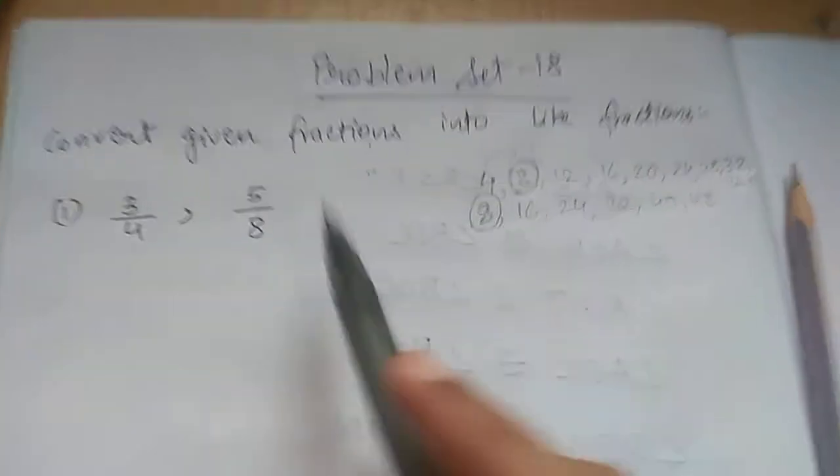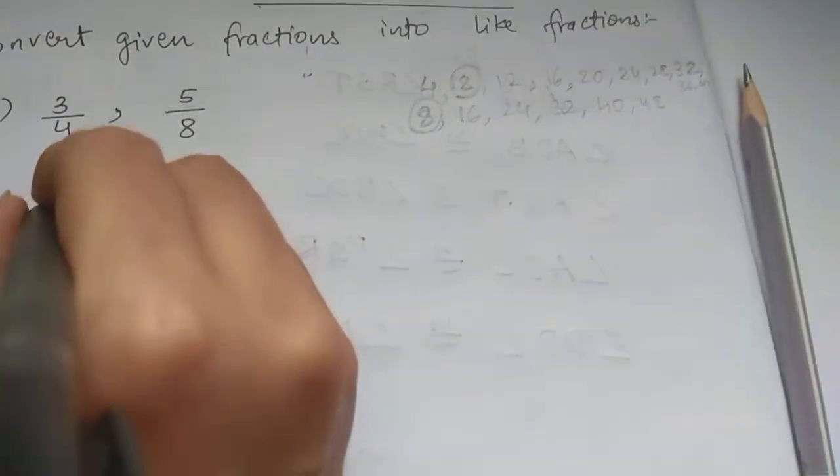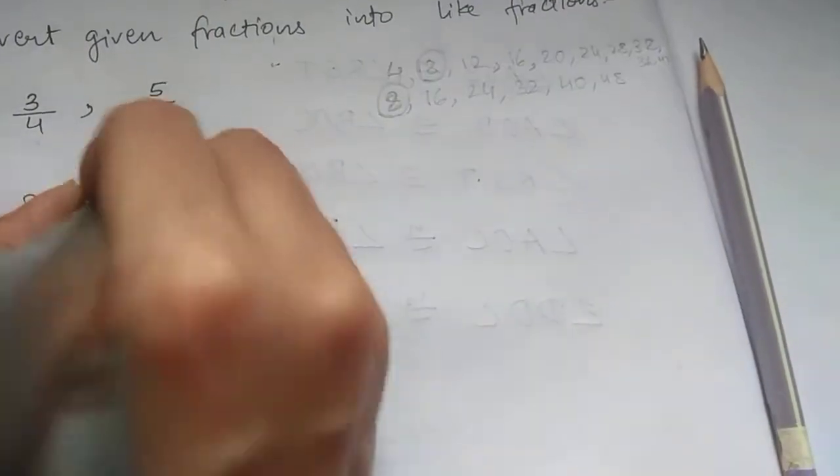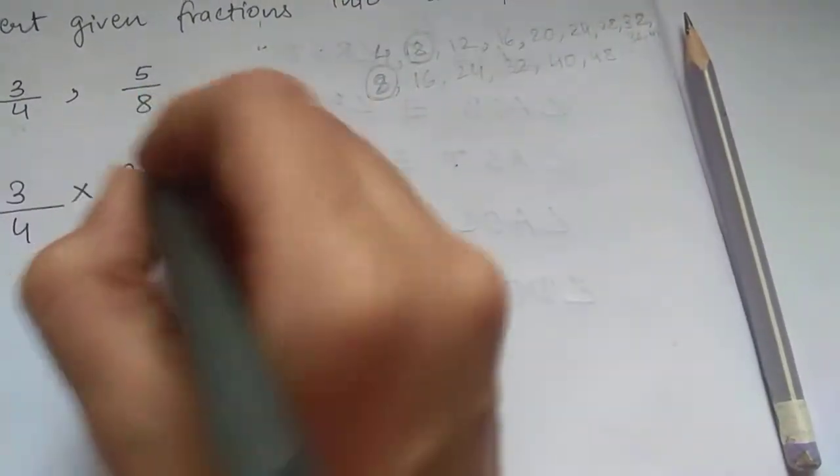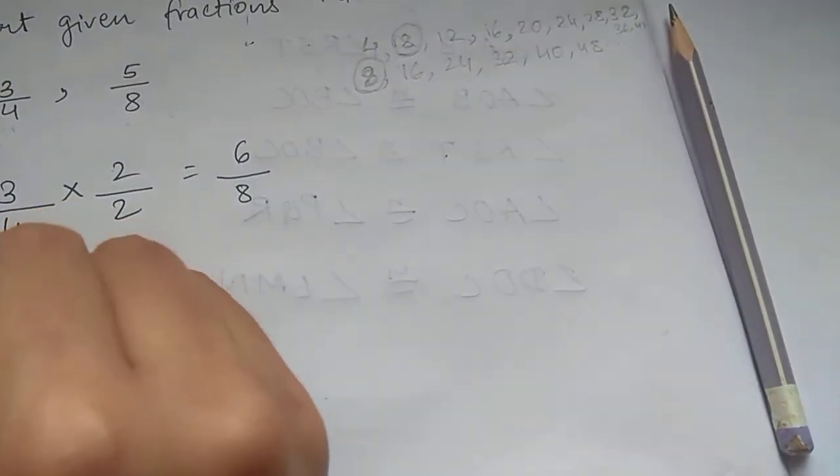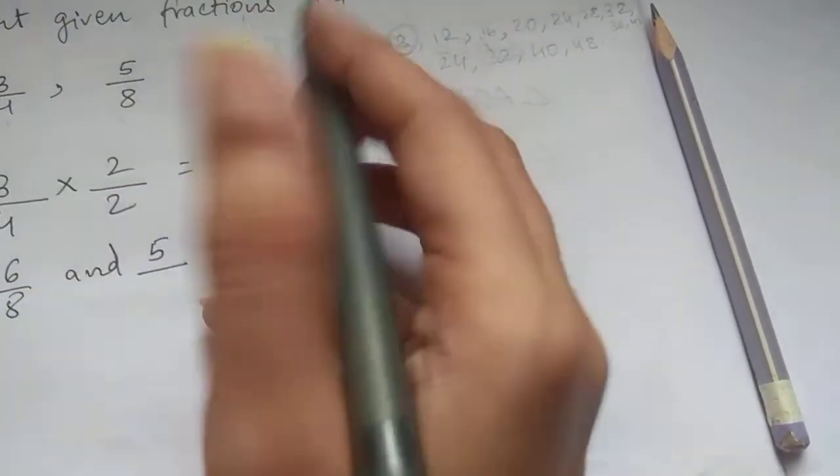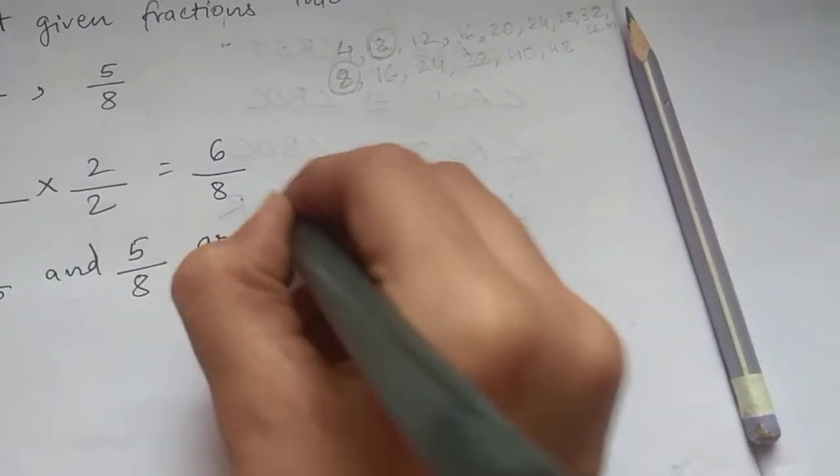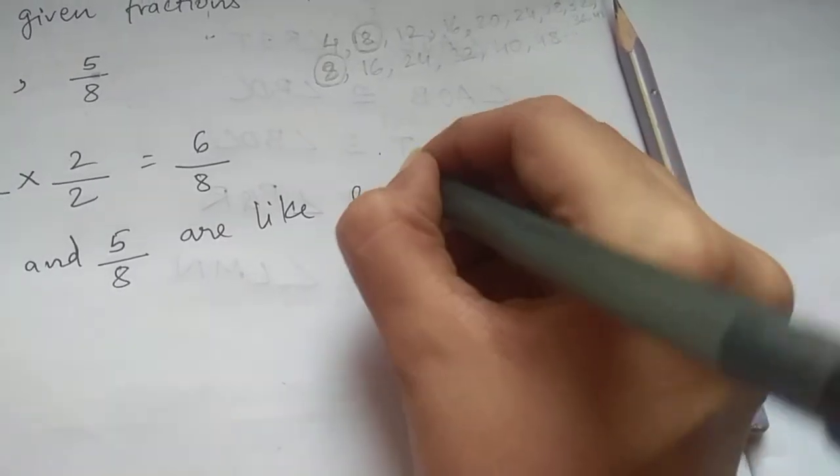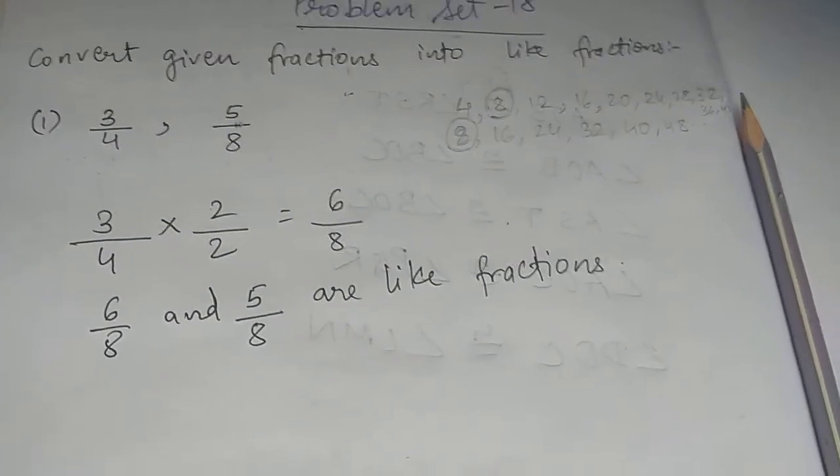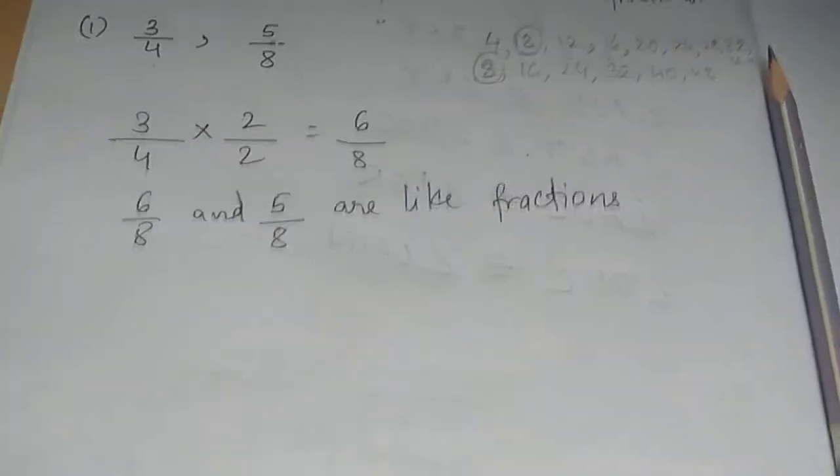So in fourth table it is two times and in eighth table it is one time, means 8 we can keep as it is. 5 upon 8 will be as it is. We can convert 3 by 4. We have to multiply by 2, that's how we will get 8. 3 times 2 is 6, so 6 upon 8 and 5 upon 8 are like fractions because denominators are same.